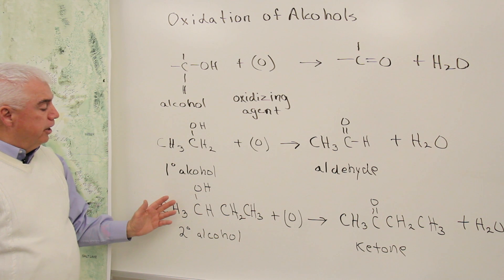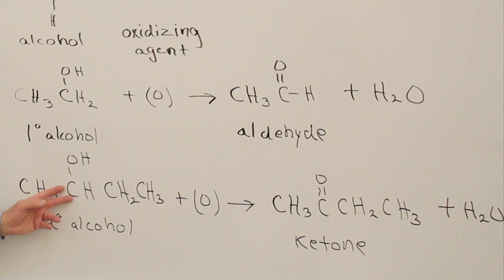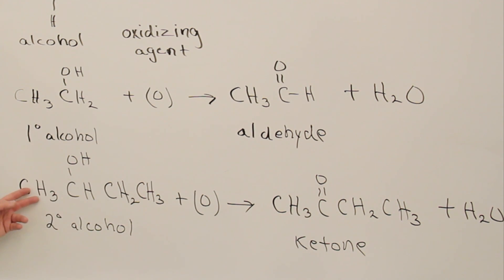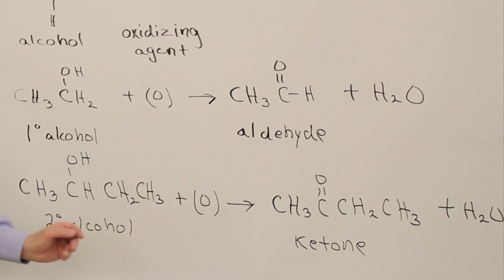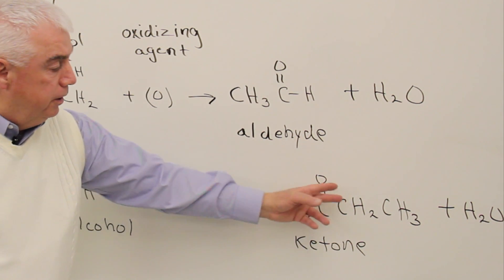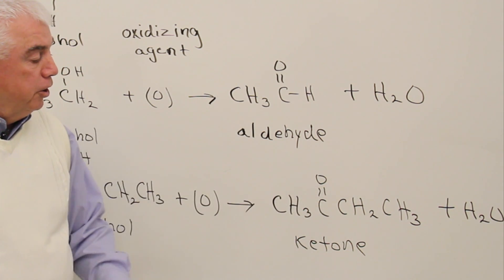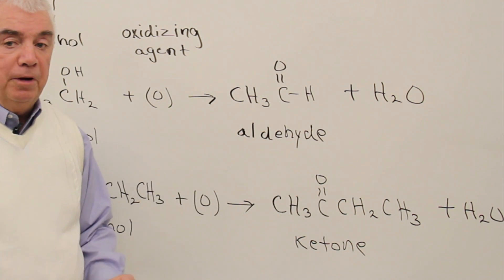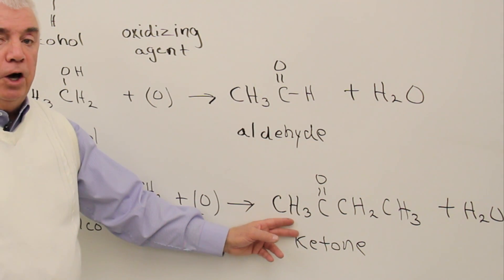If we use a secondary alcohol — where the OH is attached to a carbon that's attached to two other carbons — upon oxidation, the double bond forms at the same position, plus water. When we have a C double bond O that's between two carbons rather than on the end of the chain, it's called a ketone.